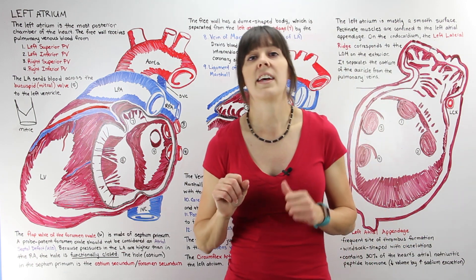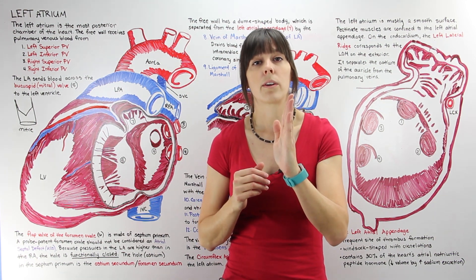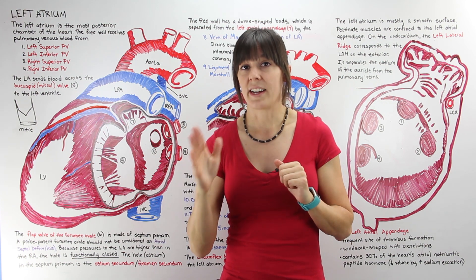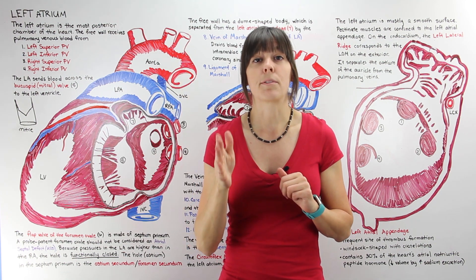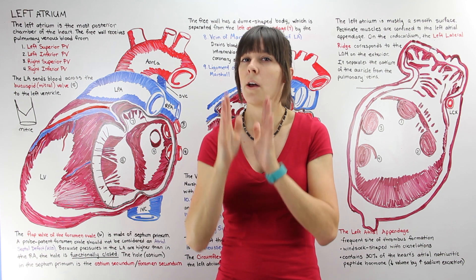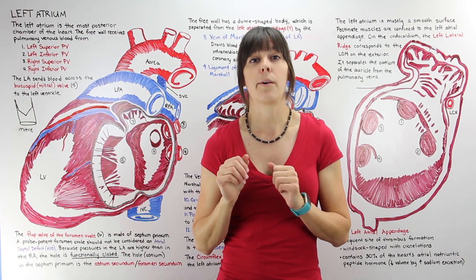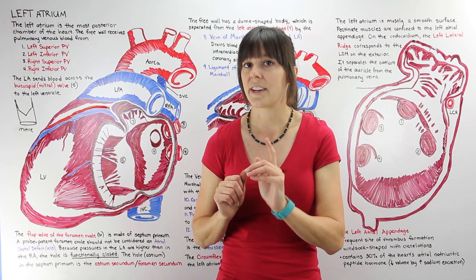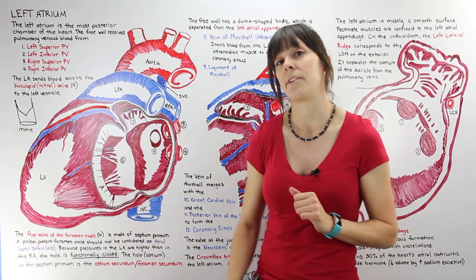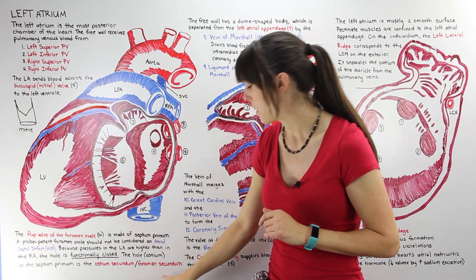In the previous video we talked about the foramen ovale and how in the right atrium you see a hole. The septum is a double-walled septum running between the left and right atrium. On the right side we call that wall the septum secundum, and on the left side we call it the septum primum. Both walls have a hole that allows the passage of blood. On the right side we call that hole the foramen ovale; on the left side we call it the ostium secundum or foramen secundum — so even though the wall is the septum primum, the hole in that wall is the foramen secundum.